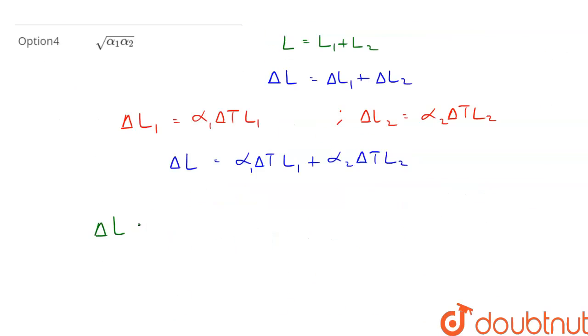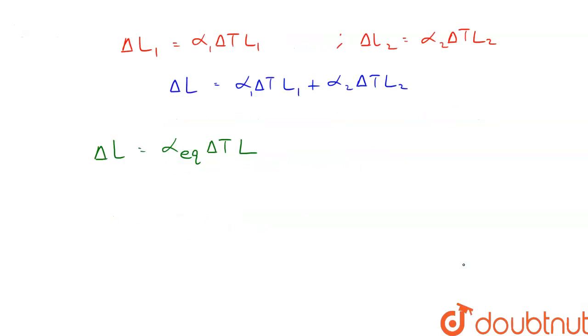is equal to α_equivalent times ΔT times L. ΔL is written as ΔL₁ plus ΔL₂, which equals α_equivalent times ΔT times L.